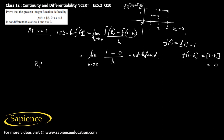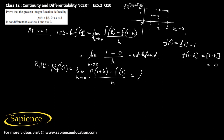The right hand derivative at x = 1 is r f'(1), which equals the limit as h tends to 0 of f(1 plus h) minus f(1), divided by h. Now [1 plus h] = 1, and f(1) = 1, so this becomes the limit of (1 minus 1) divided by h, which is 0/h.